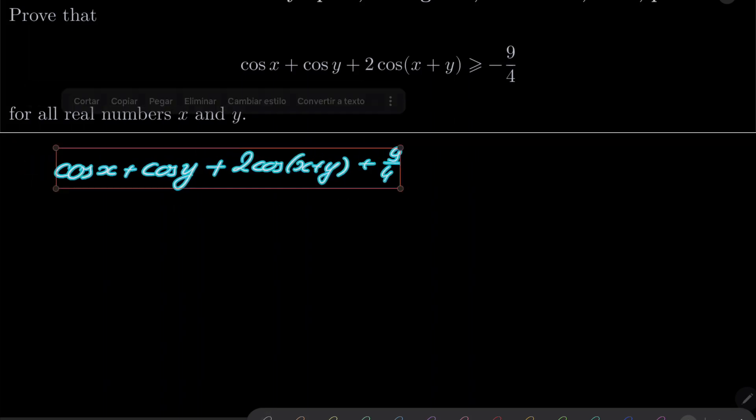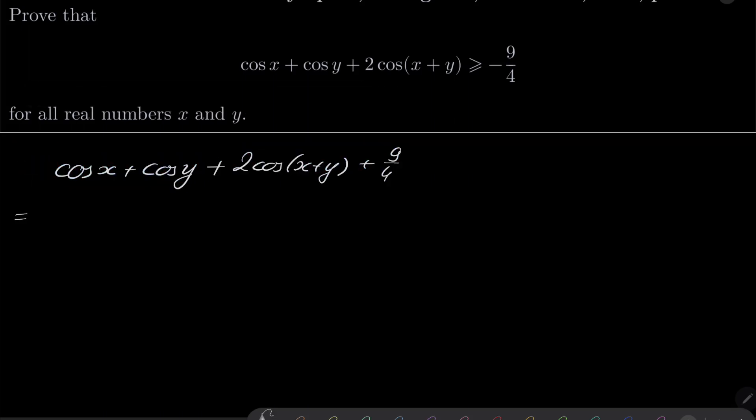The first two terms can be replaced by 2 cosine of (x minus y) over 2 cosine of (x plus y) over 2, and notice that we have cosine of (x plus y) over 2, which suggests to replace this part by 2 cosine squared of (x plus y) over 2 minus 1 plus 9 over 4.